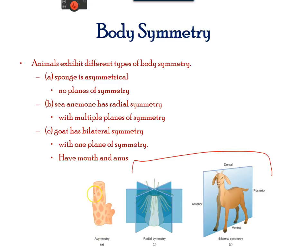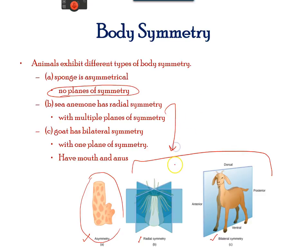Animal bodies may be asymmetrical, radial, or bilateral in plan. Asymmetrical animals have no symmetry and are generally no fixed shape, such as seen in a sponge. Radial symmetry can be seen in a jellyfish or sea anemone — the body can be divided in different planes. Bilateral symmetry is seen in humans as well as goats; a vertical plane will cut from front to back and separate into a mirror image, giving these animals a left and right hand side.